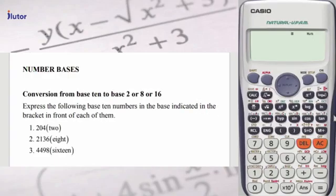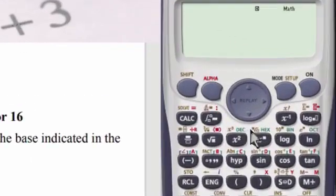You can see these green labels, functions written on top of some of the buttons here. Those are specialized for number base calculations. You have Dec, which is the decimal base, that's base 10. We have the hexadecimal for base 16, binary for base 2, and octal for base 8. So these are the four number bases that you can do calculations in using the calculator.